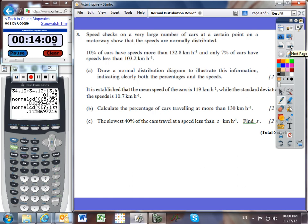Speed checks on a very large number of cars, which is one of the characteristics of a normal distribution as a large sample size, show that the speeds are normally distributed. 10% of cars had speeds more than 132.8. 7% had speeds less than 103.2. We have to draw a normal distribution diagram to illustrate this information, indicating clearly both the percentages and the speeds. So let's draw a normal distribution curve. We know that our mean is 132.8. Oh, I'm sorry, that's not the mean, is it? I haven't got to the mean yet, so let's just get rid of that and start this problem again.